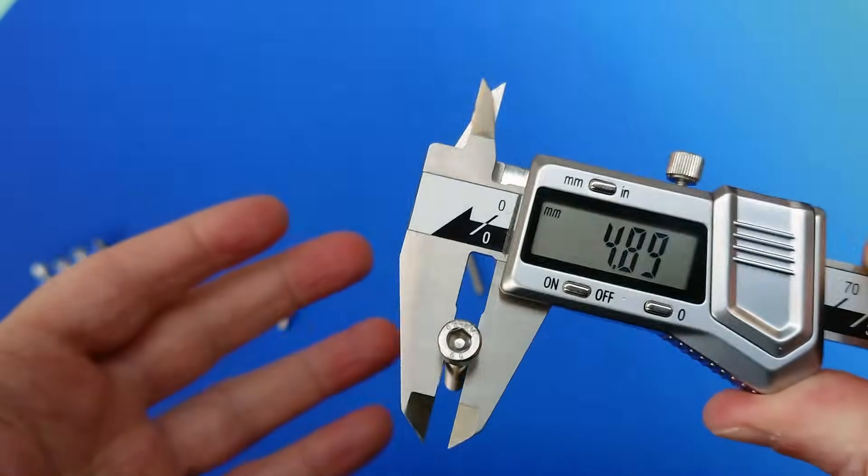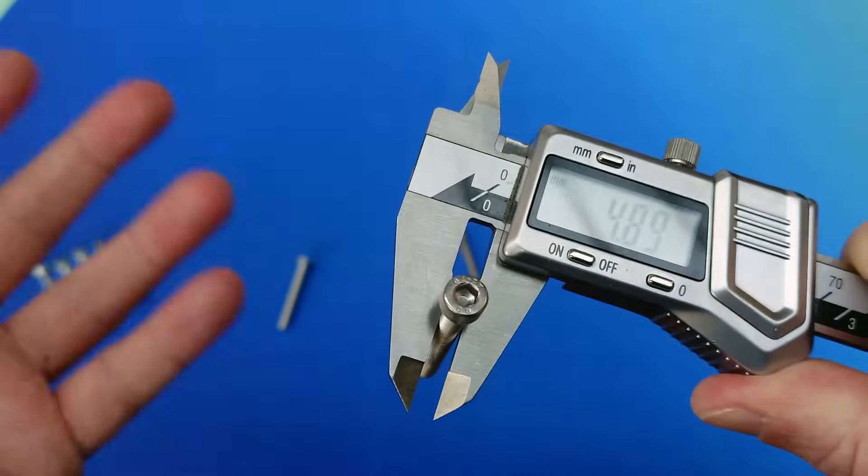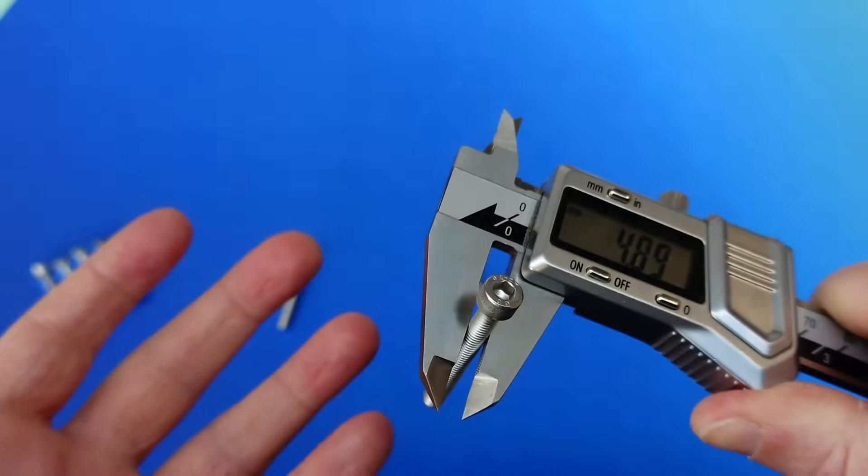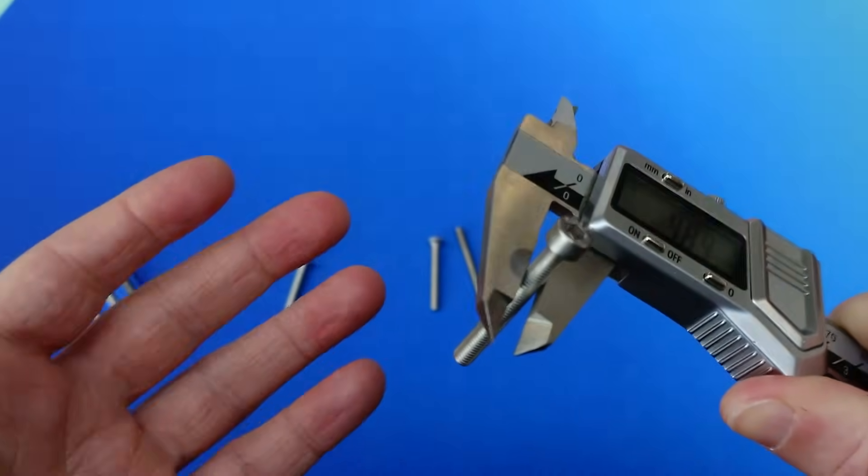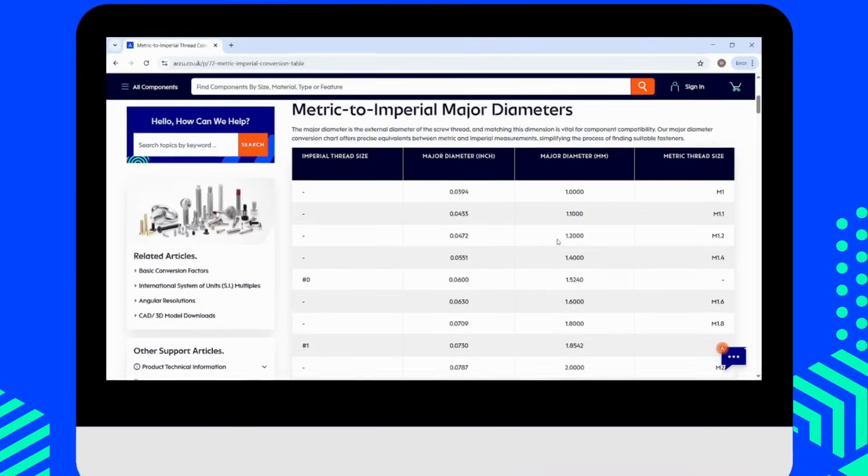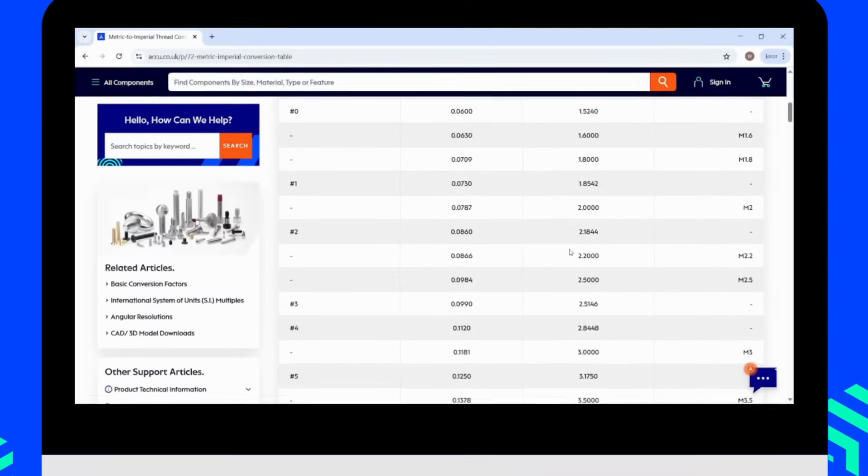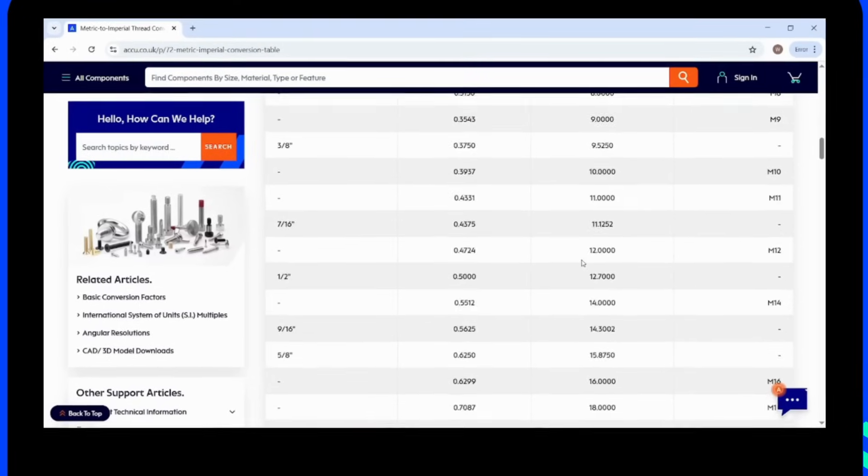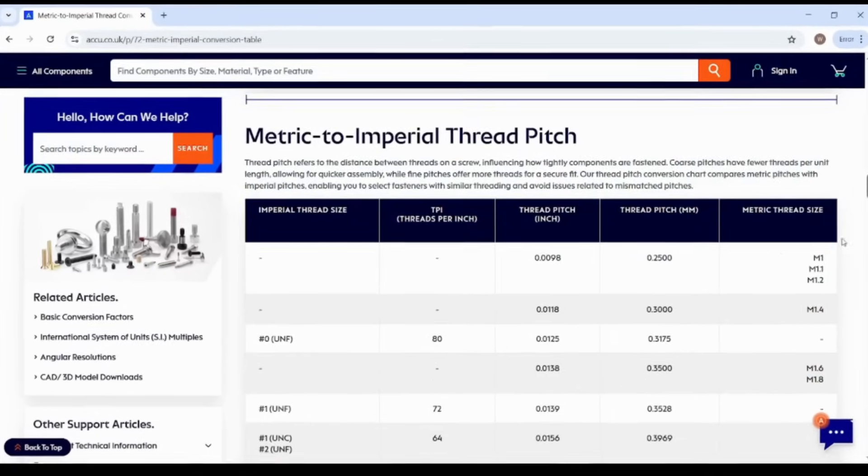So, for this cap head, we've got 4.9 millimeters, which is within the tolerance for 5 millimeters. So, we can safely say that it's an M5 screw. If you're ever unsure though, we've got a handy metric to imperial diameter chart on the ACCU website, which will help you find the closest standardized major diameter from your measurements. I'll link to that in the description below, it's a really useful page to keep bookmarked.